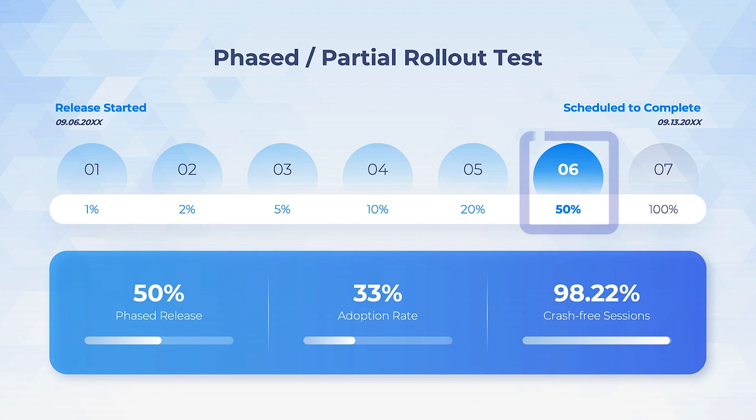In this example, the rollout is in phase 6, with 50% of the user base already receiving it. At the bottom, highlight success metrics, such as adoption rate and crash-free sessions.